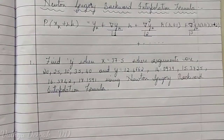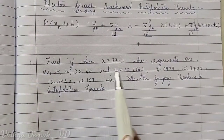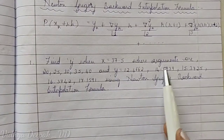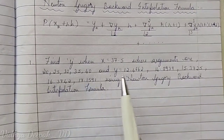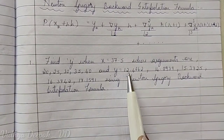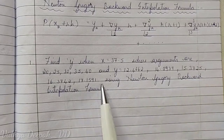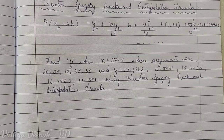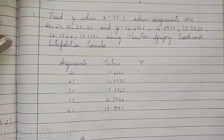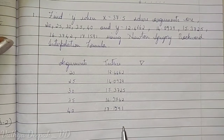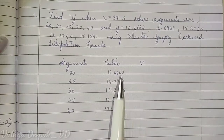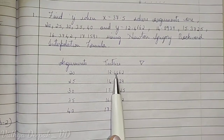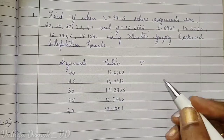Let us check out the second problem: find y when x = 37.5, where the arguments and y-entry values are given, using Newton-Gregory backward interpolation formula. First, set up the table. Since entries are given to decimal places, fix your calculator to 4 decimal places.